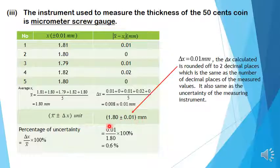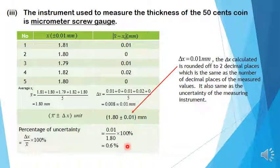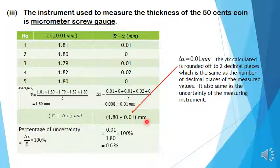Then calculate for the percentage of uncertainty using this formula: 0.01 divided by 1.80, multiplied by 100%. The result is 0.6%. The percentage of uncertainty is less than 15%, which means the result obtained for the thickness of the coin is acceptable.